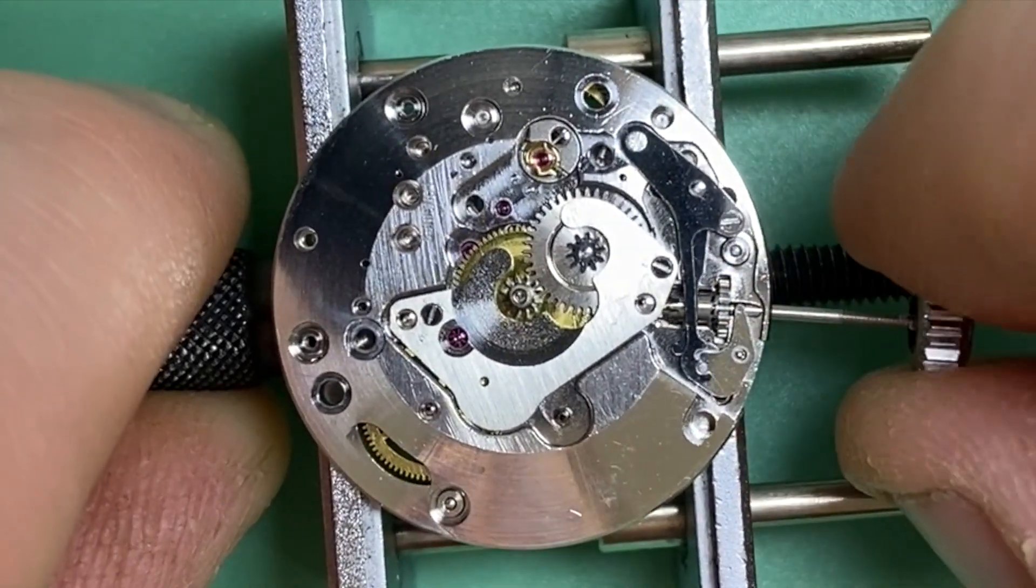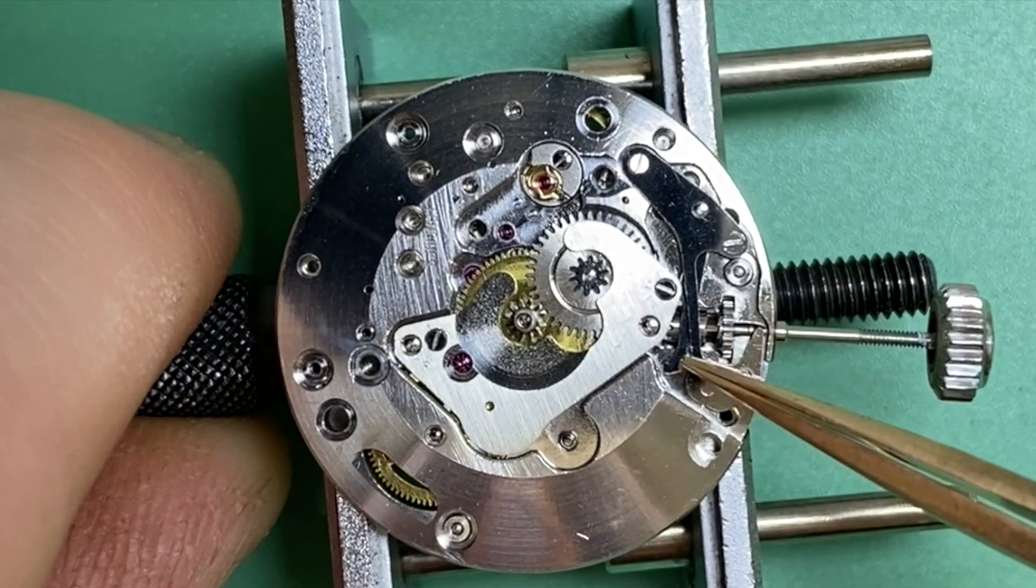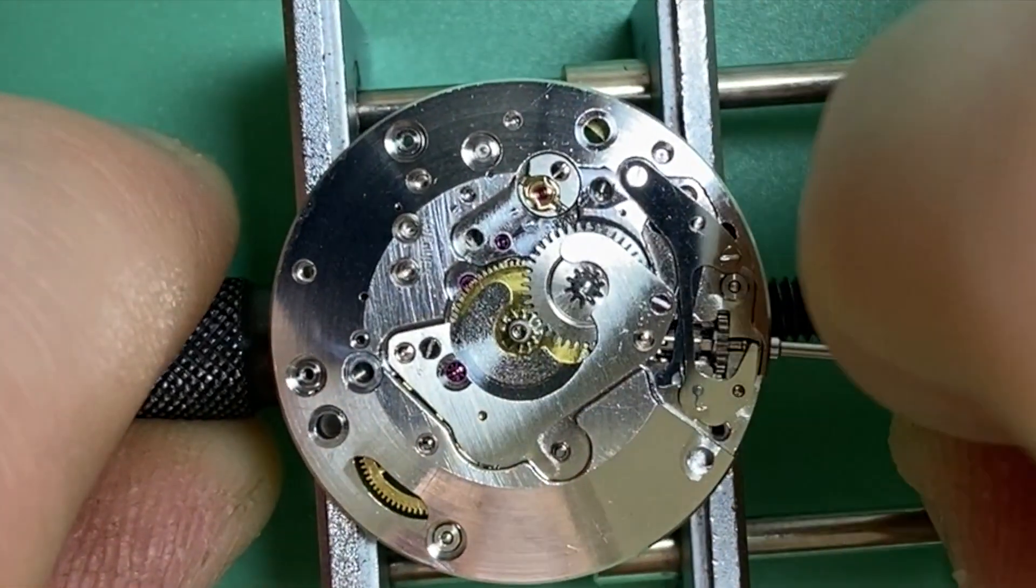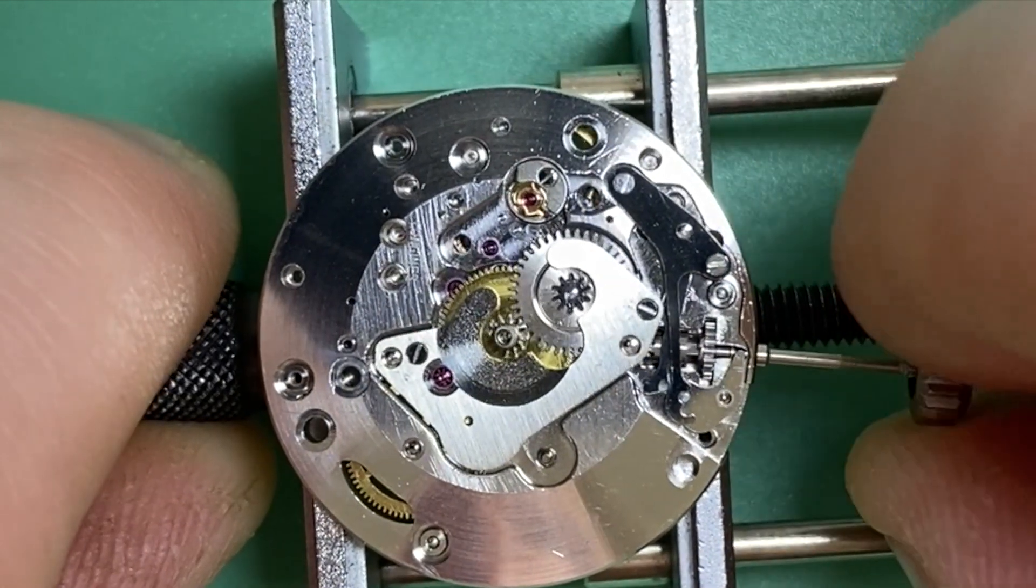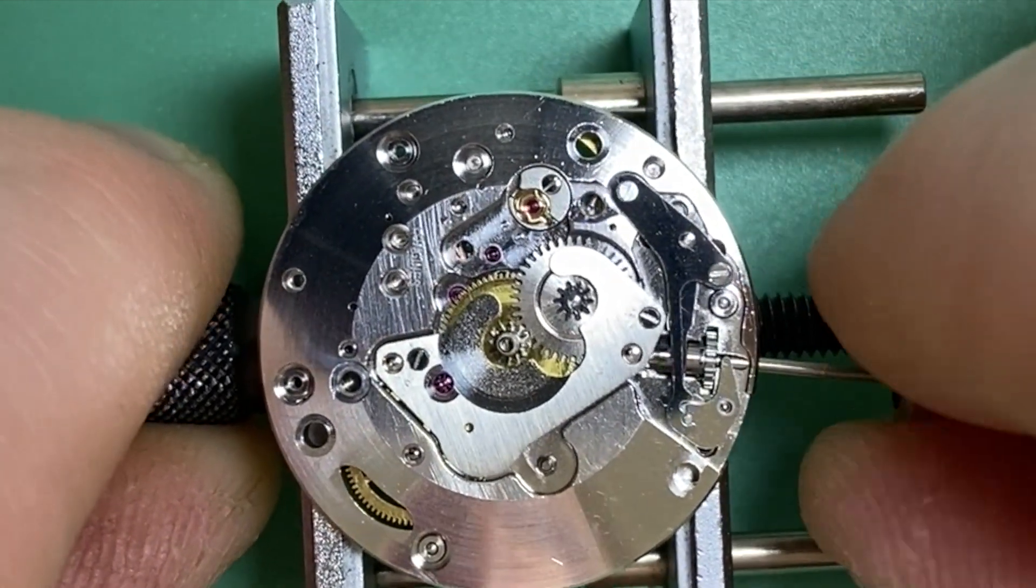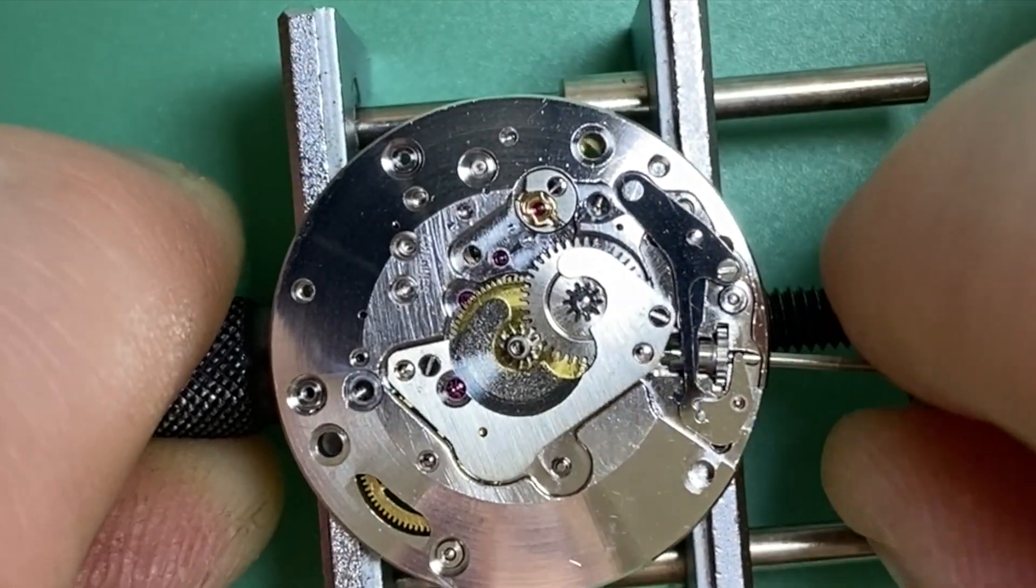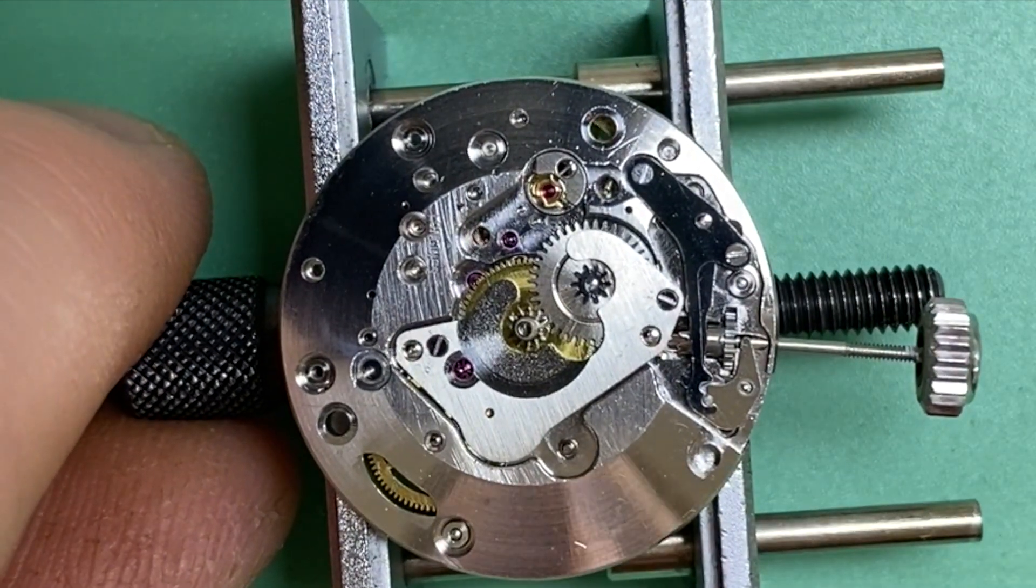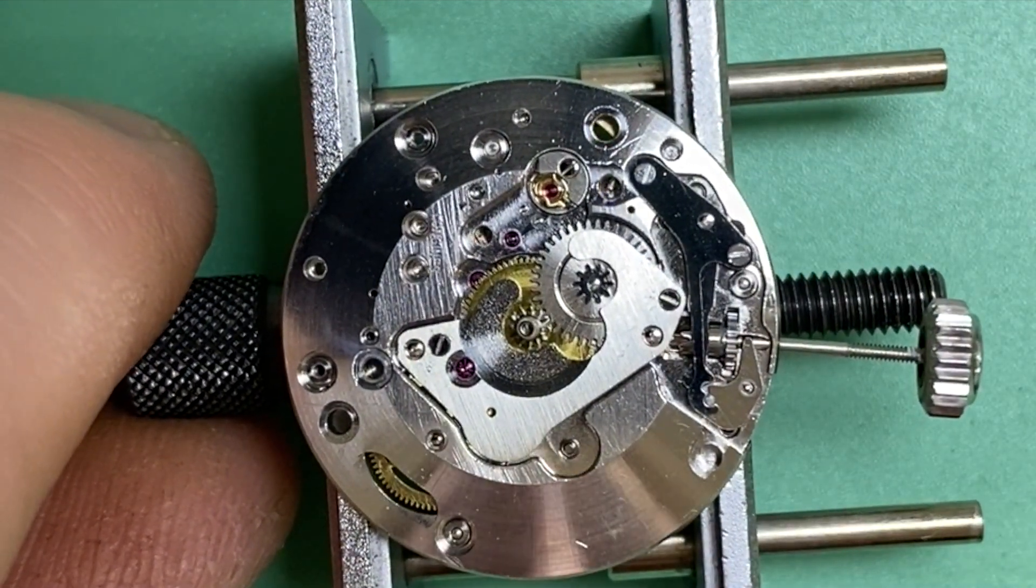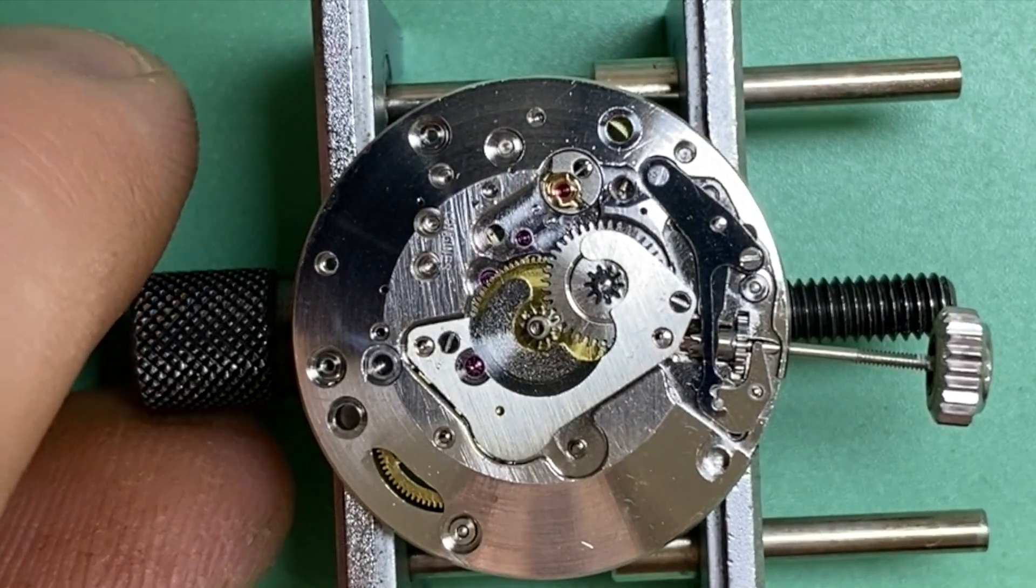Basically it helps to move the sliding pinion forward so that we can engage the correct components to set the time, and then it moves the sliding pinion back so that we can engage the correct components to wind the watch. It's an integral part of the watch movement, a small relatively simple part but integral nonetheless so that we can wind the watch and set the time correctly.